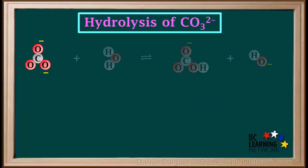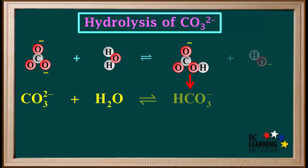Now we can write the equation for the hydrolysis of the carbonate ion. It is CO3^2- plus H2O gives HCO3- plus OH-. In this video, we'll leave out the subscripts aq and l for simplicity.